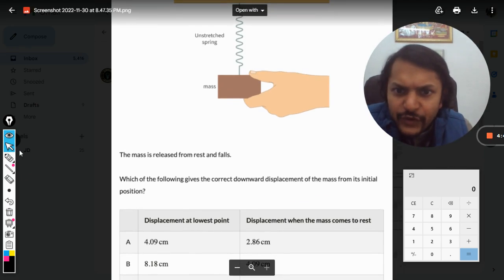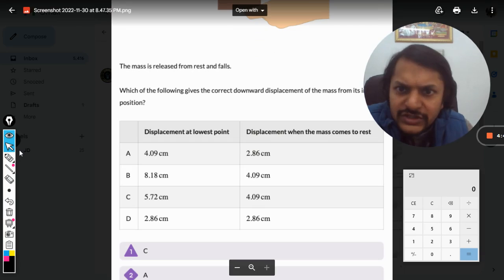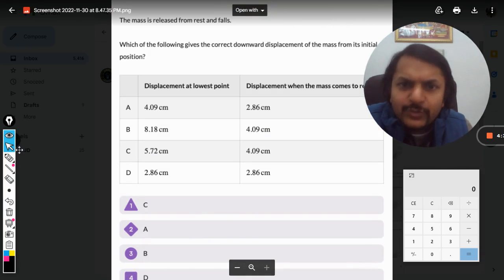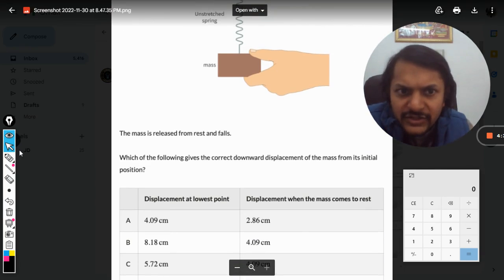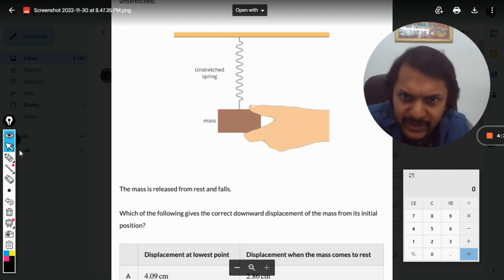The mass is released from rest and falls. Which of the following gives the correct values: the displacement at the lowest point, and the displacement when the mass comes to rest? Okay, fine. Dear students, let us see what is happening in this question.